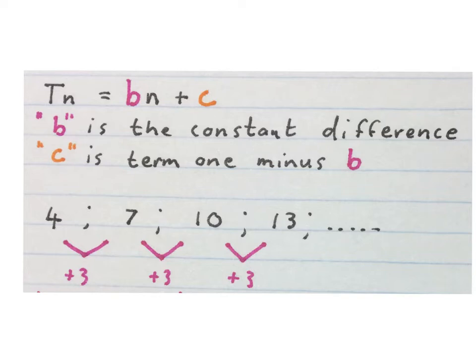Like the sequence we have over here: we add 4 plus 3 gave us 7, plus 3 gave us 10, and so on.